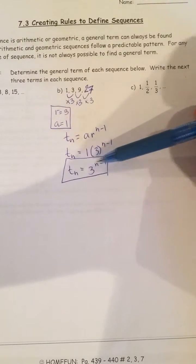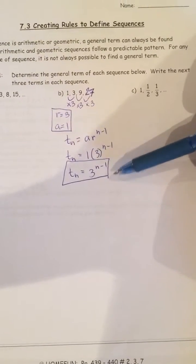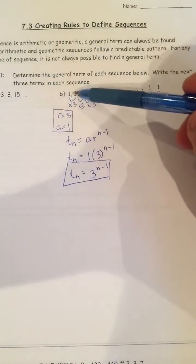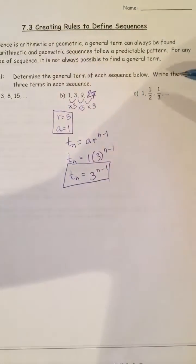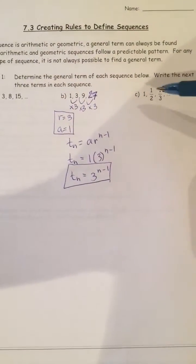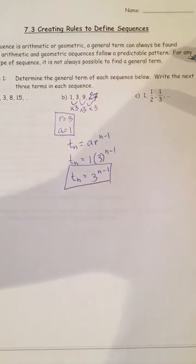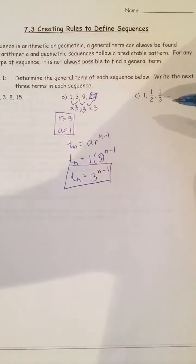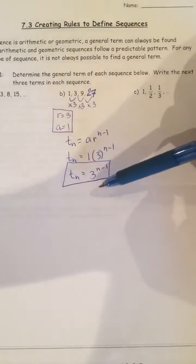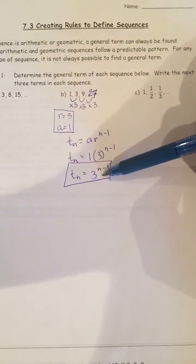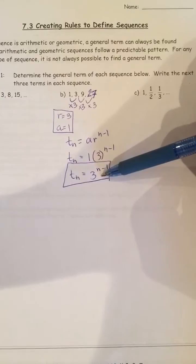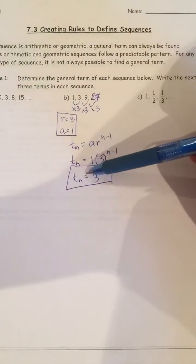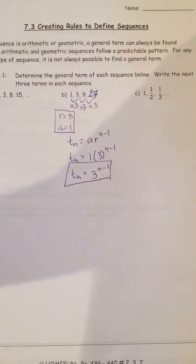We always use the general term formula to find a specific term — for example, term number 9. We wouldn't carry out the pattern nine times. Clearly, you also wouldn't do that for term 900, so we treat term 900 the same way as term 9: always use the general term formula.